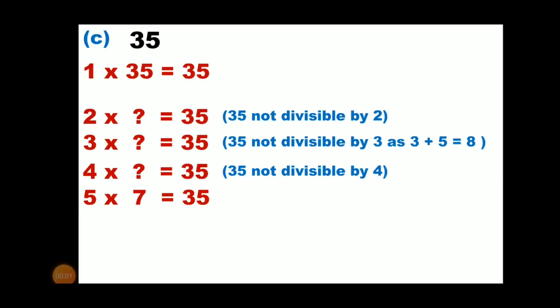Next we have to check in the table of 6. 35 is not coming. So 35 is not divisible by 6 also. Next one is 7. So in the table of 7, 7 fives are 35.